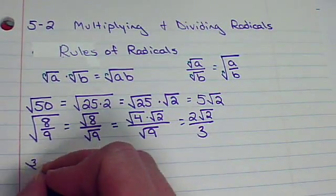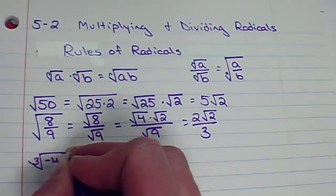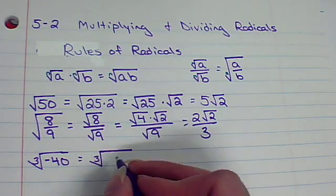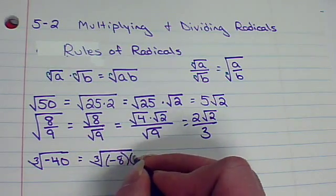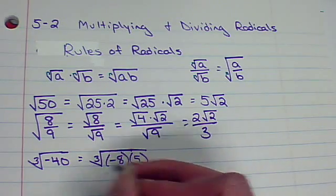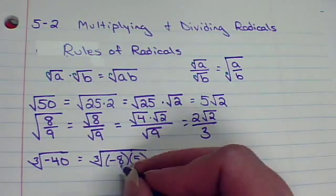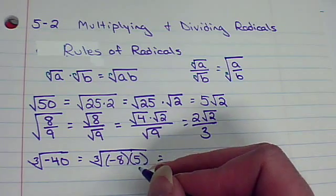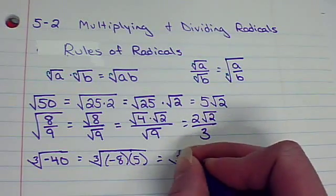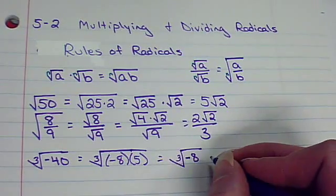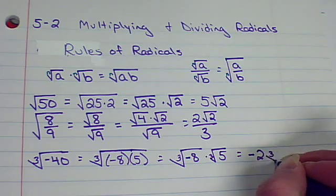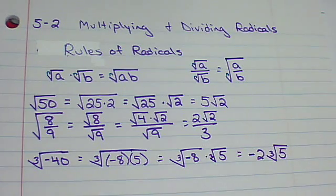So, for example, what if I had the cube root of negative 40? I can break that down into the tree. Or, if I really think about it, I know that's really negative 8 times 5. Now, just a reminder, why is it okay to have a negative under here? Well, if it's odd, then it's okay. Because the cube root of negative 8, if we really think about that, if I took negative 2 times negative 2 times negative 2, I'd get negative 8. So, that's okay. So, let's break it down. Cube root of negative 8 times the cube root of 5 would give me negative 2 cube roots of 5. So, it works no matter if we have square roots or cube roots.